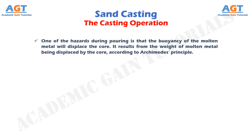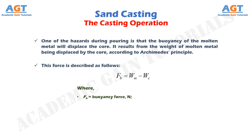This displacement results from the weight of molten metal being displaced by the core, according to Archimedes' principle. This buoyancy force is described as: FB = WM − WC, where FB is the buoyancy force expressed in newtons, WM is the weight of molten metal displaced expressed in newtons, and WC is the weight of the core expressed in newtons.